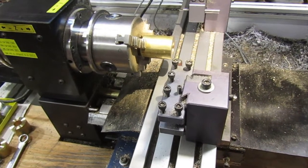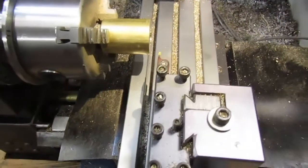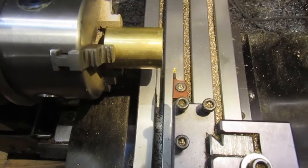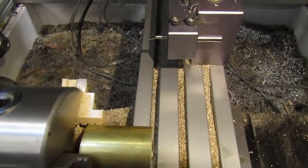For today's project we will be making some brass end caps on our CNC Tormach mini lathe. Let's take a quick look at our tool setup for this project.